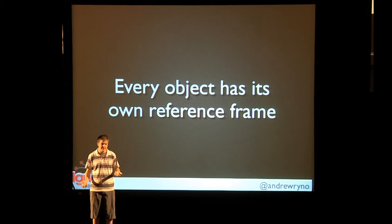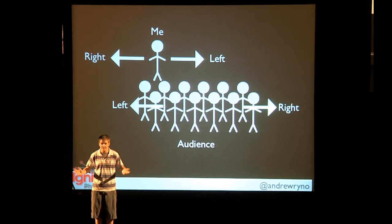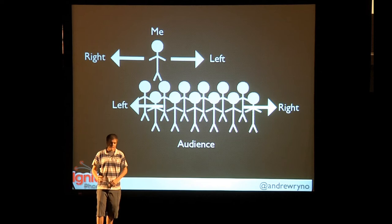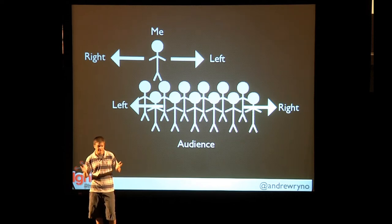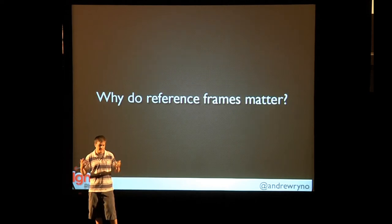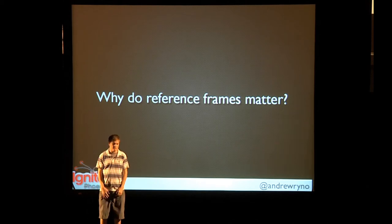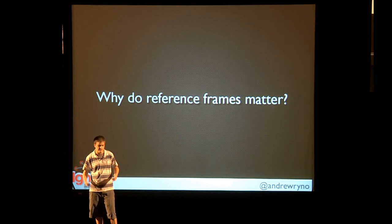If you're wondering what a reference frame is, here's a basic explanation. If I look to my right and the audience looks to their right, we're looking in completely opposite directions. That means my reference frame for left and right is much different than yours, and this carries out throughout physics — for relative speeds and relative positioning to other places. That's why reference frames matter, and different theories use them differently.